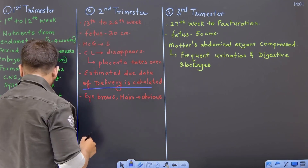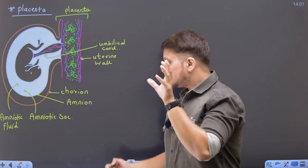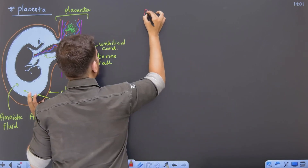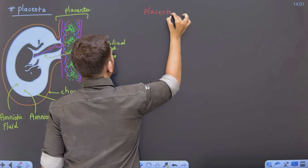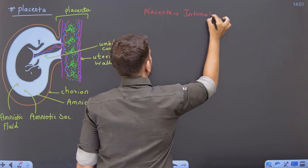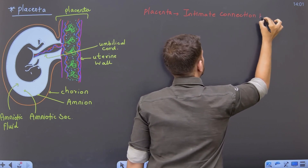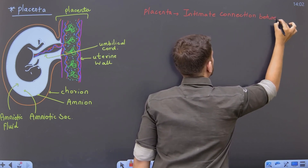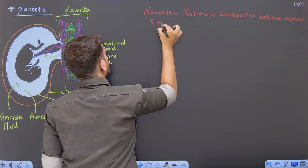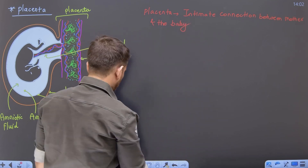So yeh toh teen pregnancy ke teen phases ke baare mein tha. Now you have to understand what is called as the placenta. Placenta aisa hai kya? Placenta ko agar mein define karta hoon, placenta is nothing but a type of intimate connection between mother and the baby. Bachche ke aur mammi ke bich ke connection ko aap bolte ho placenta.